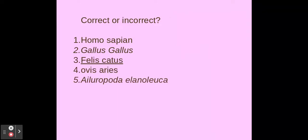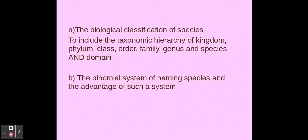Here are some examples — pause the video and have a go at figuring out if they're correct or incorrect. The first one is incorrect because it needs to be either in italics or underlined. The second one, although it's in italics, is incorrect because the species name has an uppercase letter — it should be lowercase. Number three is correct: capital letter for genus, lowercase for species, and it's underlined. Number four is incorrect because the genus needed a capital letter. Number five is correct: it's in italics, with a capital letter for genus and lowercase for species.